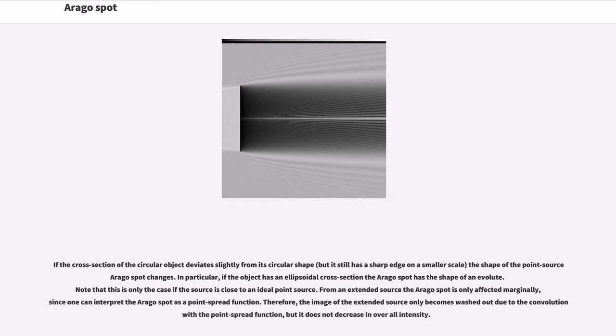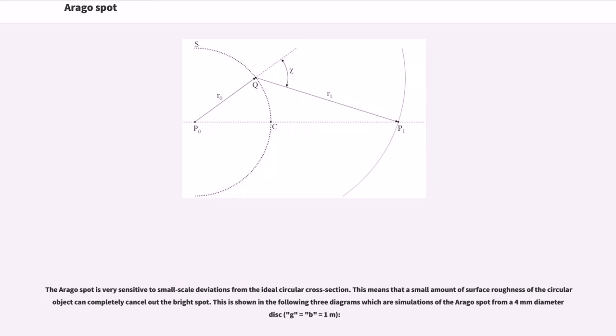The Arago spot is very sensitive to small scale deviations from the ideal circular cross section. This means that a small amount of surface roughness of the circular object can completely cancel out the bright spot.